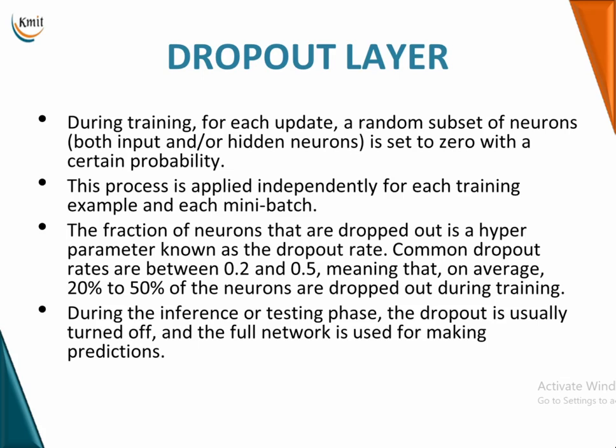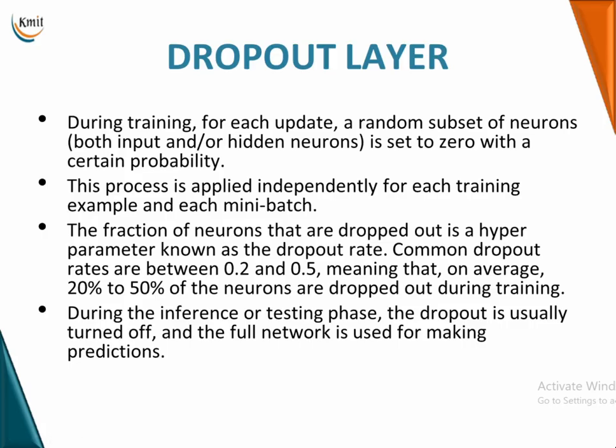Take the dropout rate that gives the best results. Keep in mind that dropout is applied only during training — during inference or testing, dropout is turned off and the entire network is used for predictions. It won't affect your testing results. If you achieve proper generalization with a specific dropout rate, maintain it to avoid overfitting in the model.